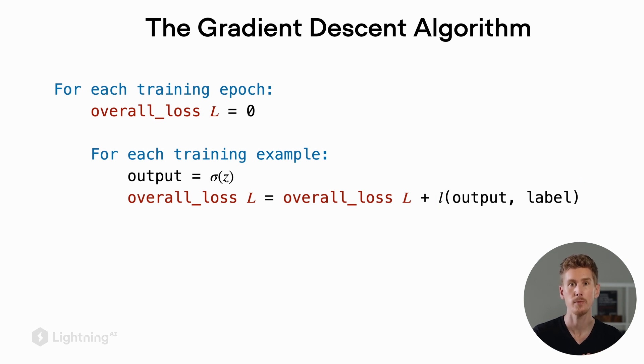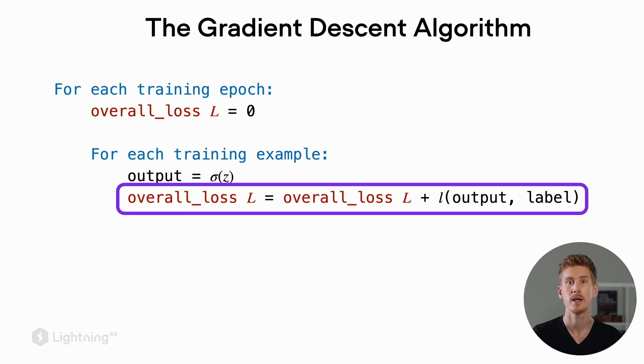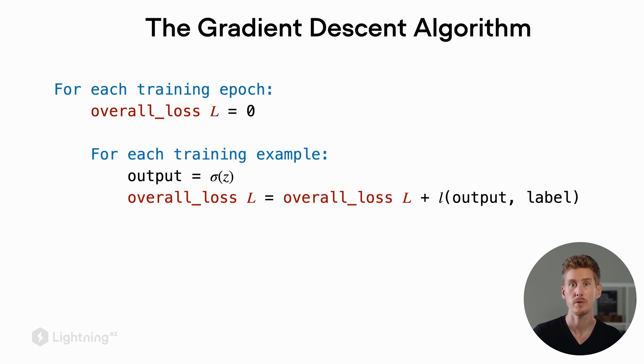And this loss value for this training example, we add this to the overall loss. So what we are doing here is we are actually summing the overall loss by iterating over the training examples.